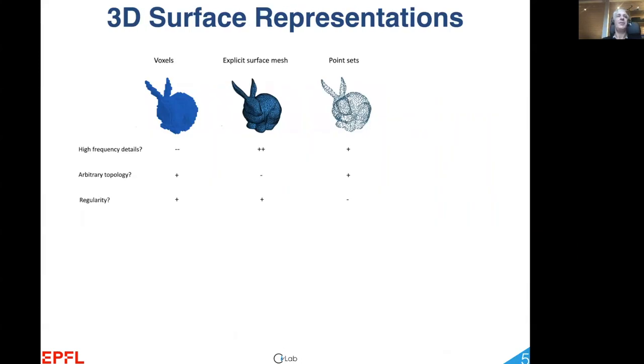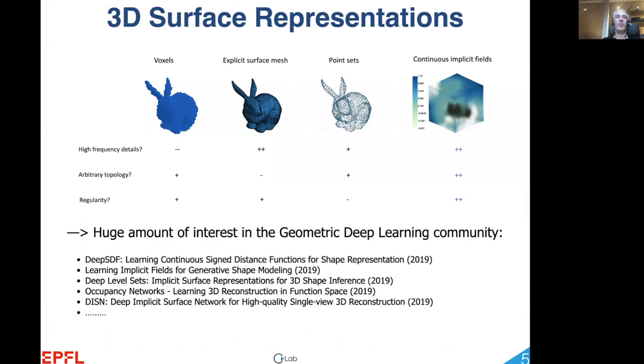And last year, deep signed distance fields, or SDFs, have emerged as a great tool to harness the power of implicit surfaces in the deep learning context. This has generated an enormous amount of interest, and I'd like to briefly summarize how SDFs work before presenting our own use of them.